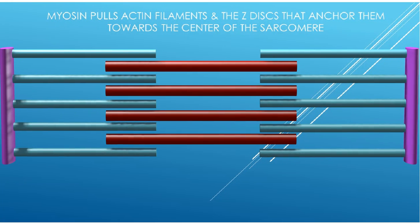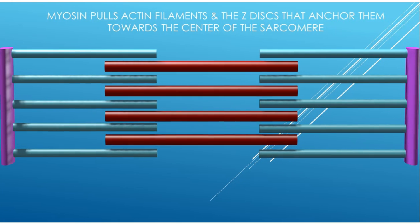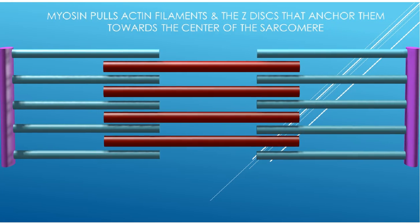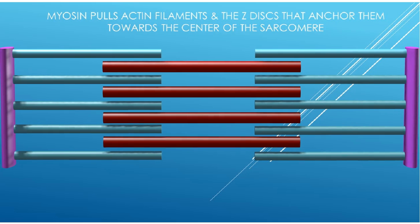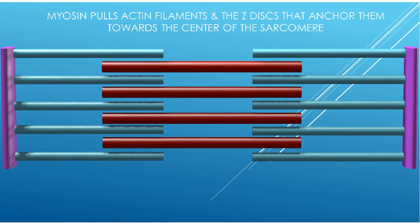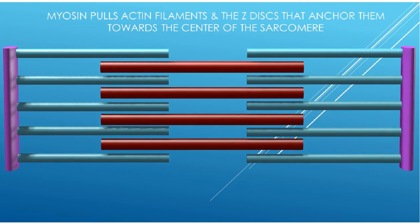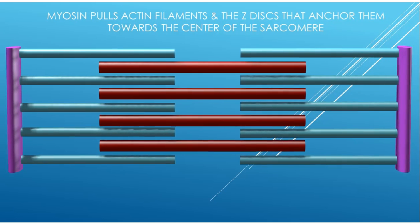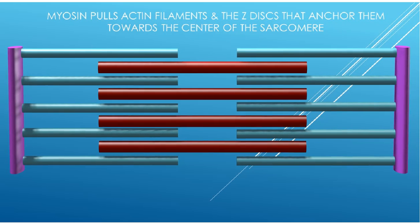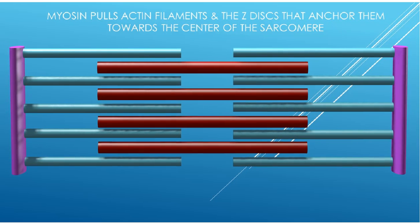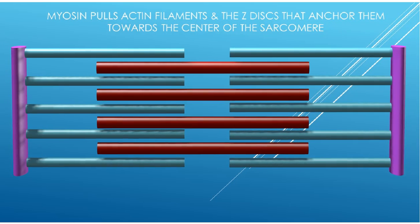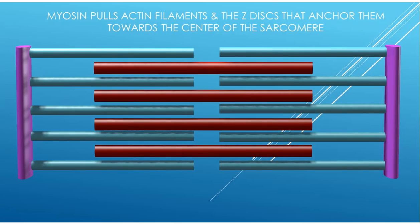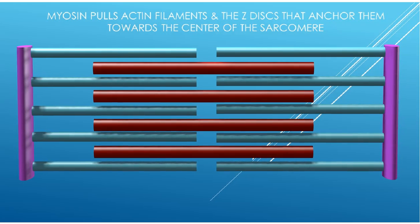The actin filaments, here depicted in blue, are anchored to the Z-discs, which form the boundaries of the sarcomeres. The thick filaments of myosin, here depicted in red, attach to the active sites of actin and pivot towards the center of the sarcomere.